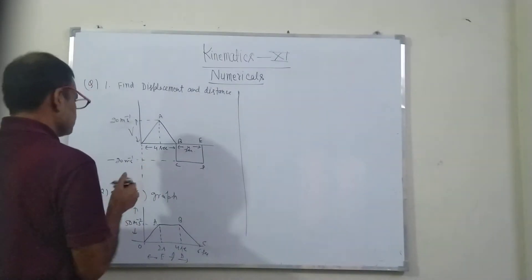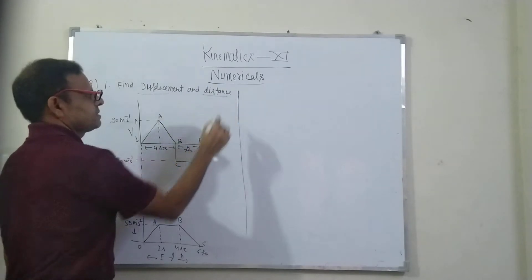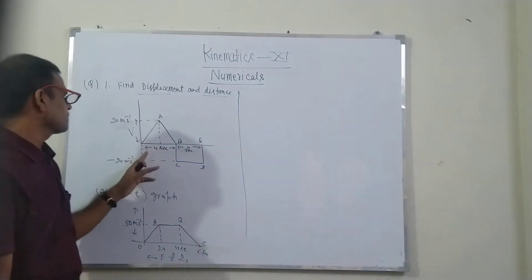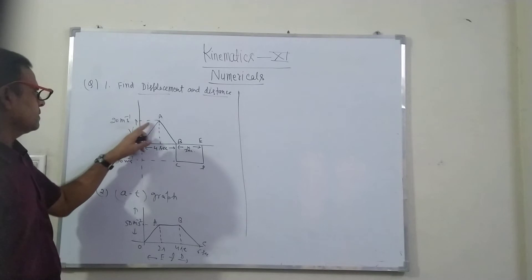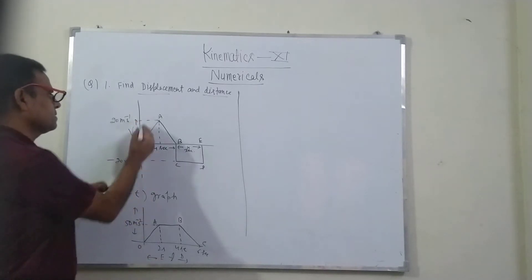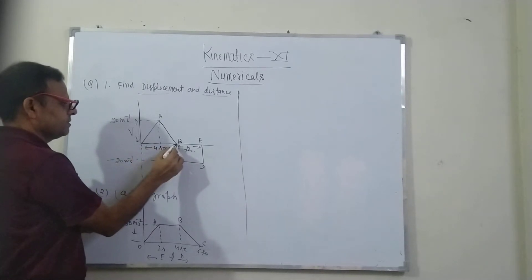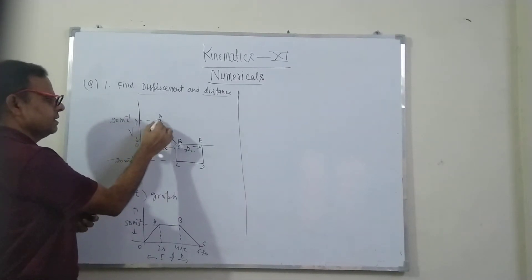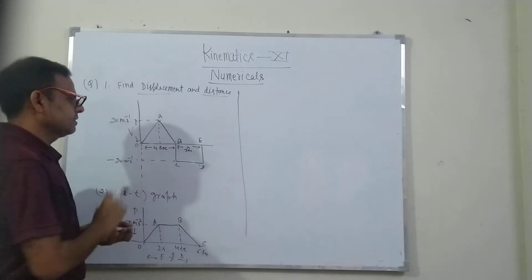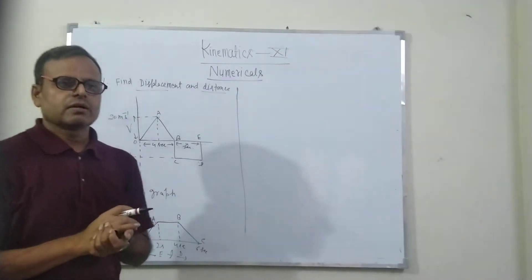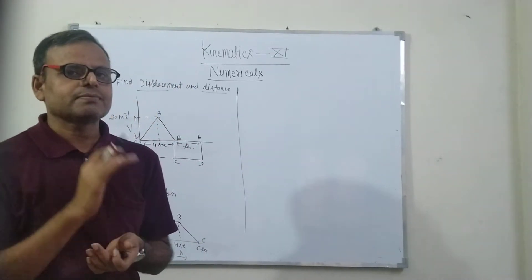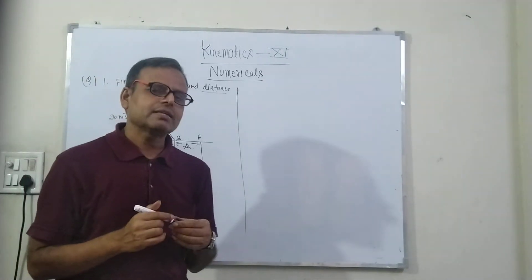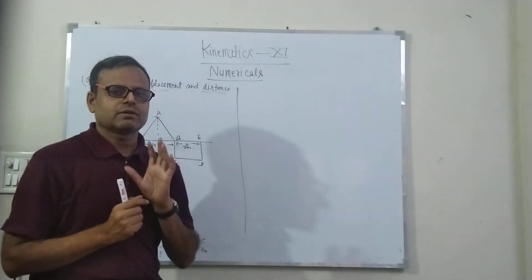In this first numerical, we have to find displacement and distance from this graph. The graph goes from O to A, A to B, D to C, D to E. How can we calculate displacement and distance? In a VT graph, we already know that displacement is the area of the graph.